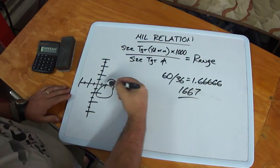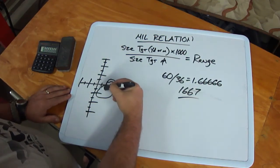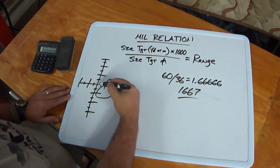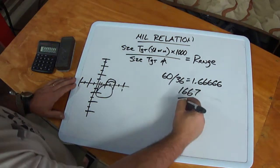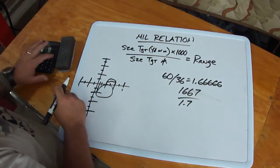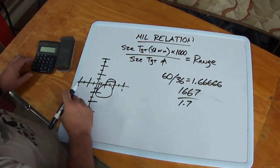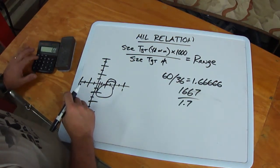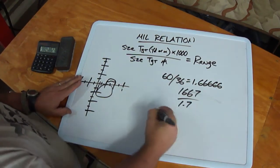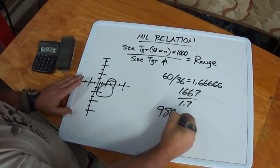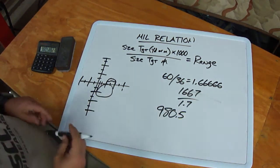Now, here's 1 mil, here's 1.5, here's 2. We're going to have to interpolate a little bit, and we'll say this is about 1.7 mils. So we say 1,667 divided by 1.7 equals 980.5 yards to our target.